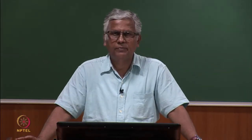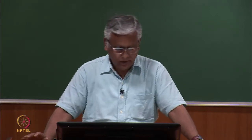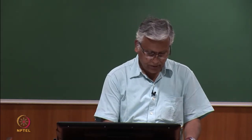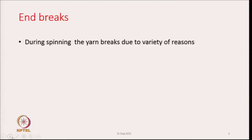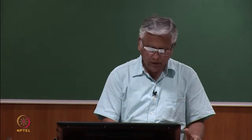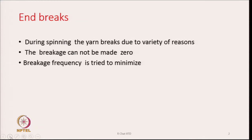Today's topic is end breaks. End breaks basically means the breaks of the yarns while spinning is continuing. During spinning, unfortunately yarn will break from time to time on some spindles due to a variety of reasons. The breakage cannot be made zero, especially with cotton spinning or when spinning staple fibers. We only try to reduce or minimize the breakage frequency, but we have not been able to make it zero.